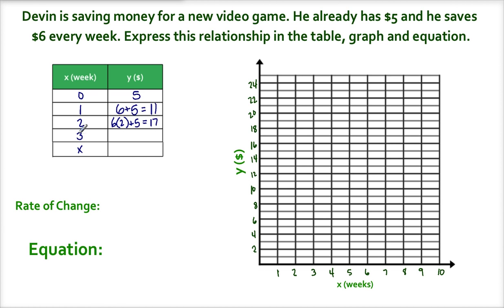How much money has he saved after three weeks? Well, he saves $6 every week, so 6 times 3, but he already started with 5, so plus the $5 he started with. 6 times 3 is 18, plus 5, 23. So after three weeks, he has $23 saved.